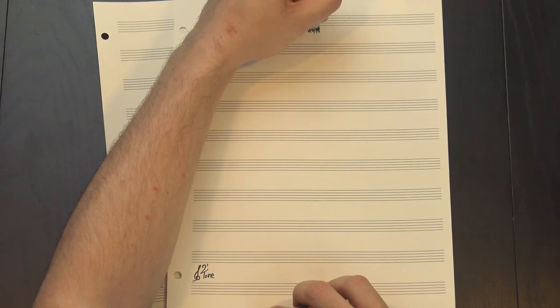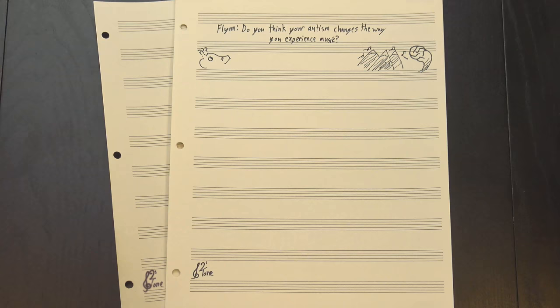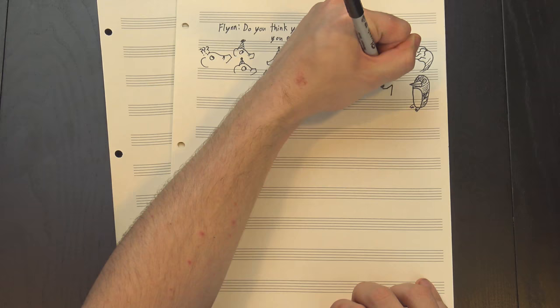Flynn asked, do you think your autism changes the way you experience music? Probably, although I'm not sure how because I've never had the chance to try listening to music without being autistic. One thing I do know is that I have a really strong aversion to background music. Not like film scores, that's meant to be there and it's designed to complement the art that it's a part of. But at restaurants, parties, and other public spaces, playing music is utterly irrelevant to the surrounding experience, and I pretty much always wish they'd just stop.